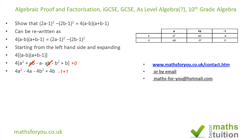I take the plus 1 across to the a terms and leave the minus 1 with the b terms. So I end up with 4a² minus 4a plus 1, minus 4b² plus 4b minus 1. This hasn't changed the expression at all — it's just regrouped the terms.